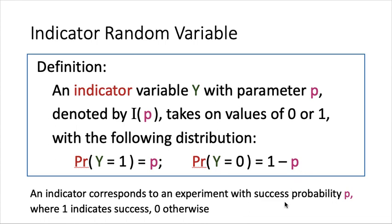The indicator random variable corresponds to an experiment such that the success probability is equal to p. The value of this random variable, when it is equal to 1, indicates that the experiment is successful, and 0 when the experiment fails.